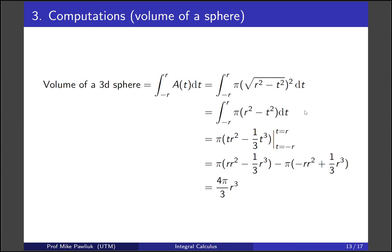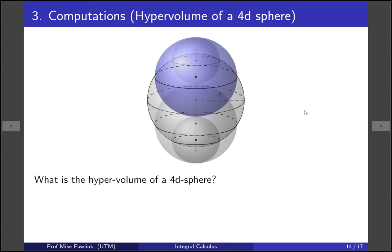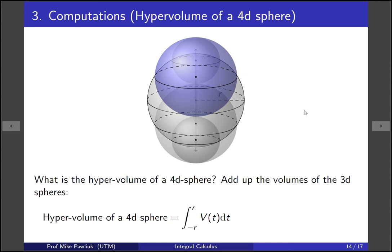Okay, so now we get to look at the really fun stuff. So what is the hypervolume of a four-dimensional sphere? Well, again, it's going to be the same idea. Add up the volumes of the three-dimensional spheres. So the hypervolume should be going from -R to R, and at every stage, every time T, you add up the volume. So at some stage T, here's the radius, and then we can figure out the volume of this three-dimensional sphere just from that radius. Turns out to be this, just like we saw before. So here we're using the volume of a sphere.